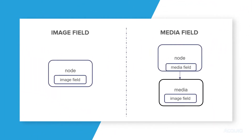Let's look at the source field concept as a diagram. With image fields, you have your entity — say an article node — and it has an image field on it. The single node really owns the image. If you want to reuse that same image somewhere else, you'll need to upload it again on that different node. With the media system, by contrast, the node references the media item, and the media item has and owns the image. So any number of nodes or other entities can reference that media.